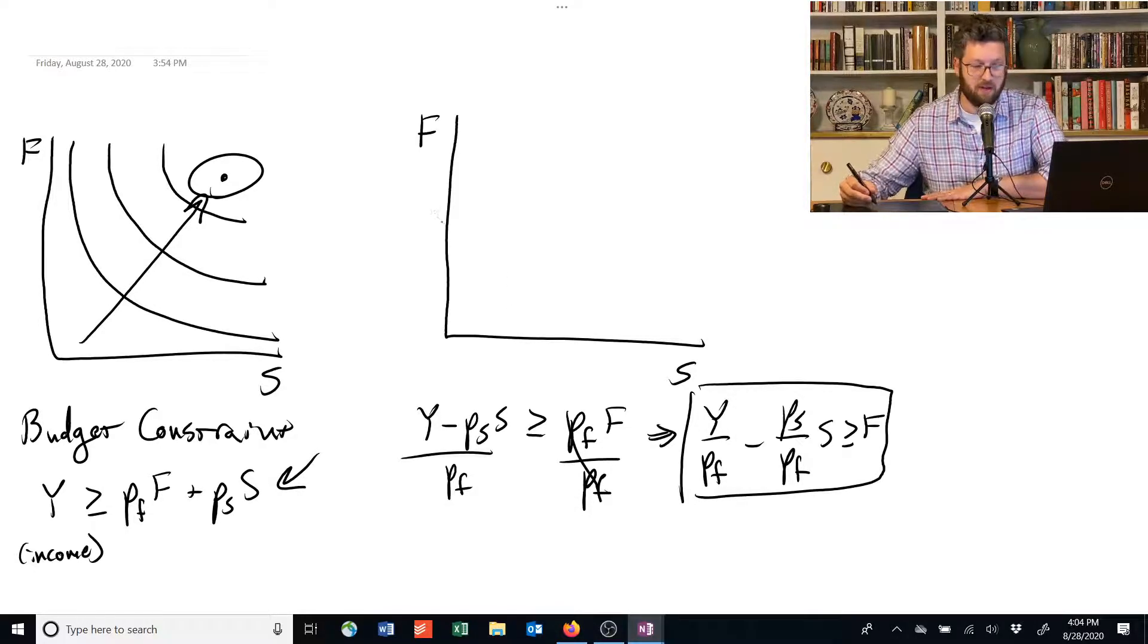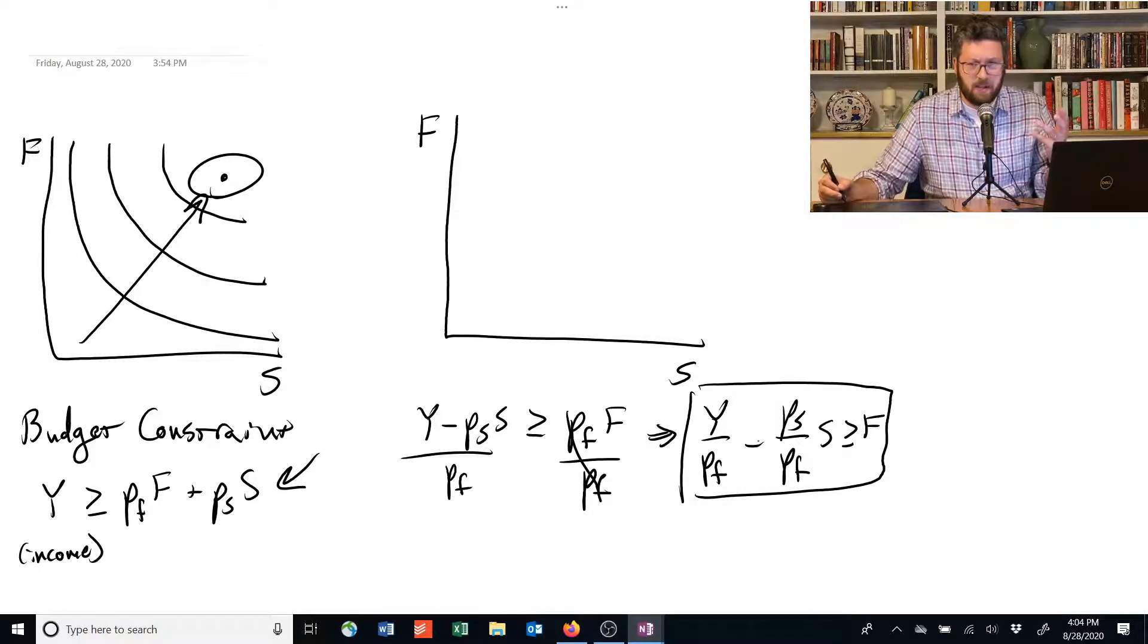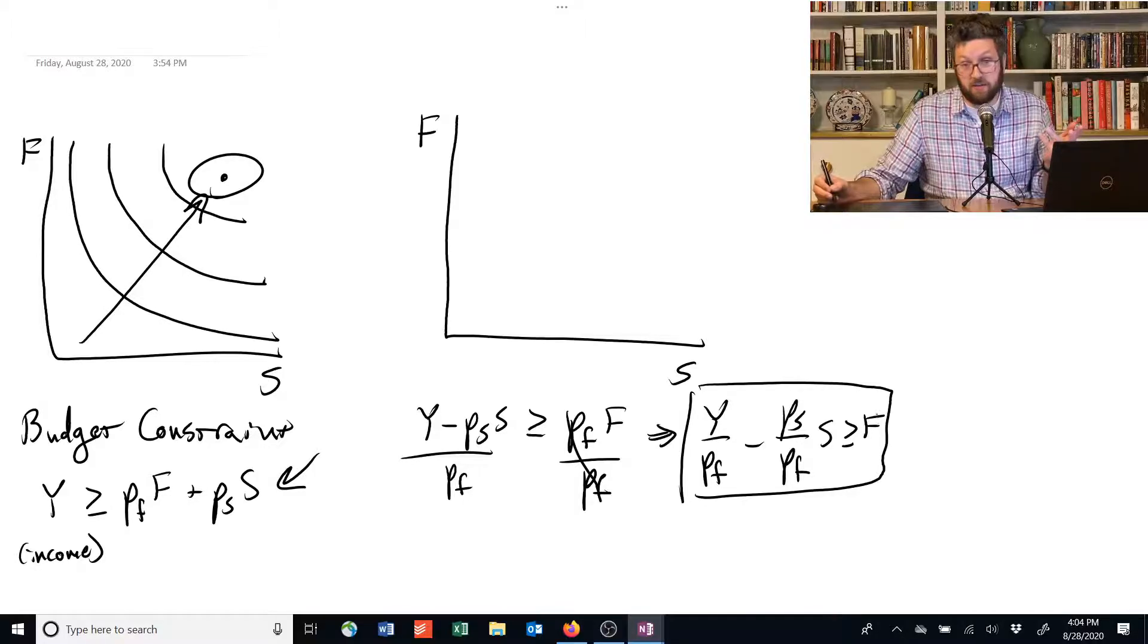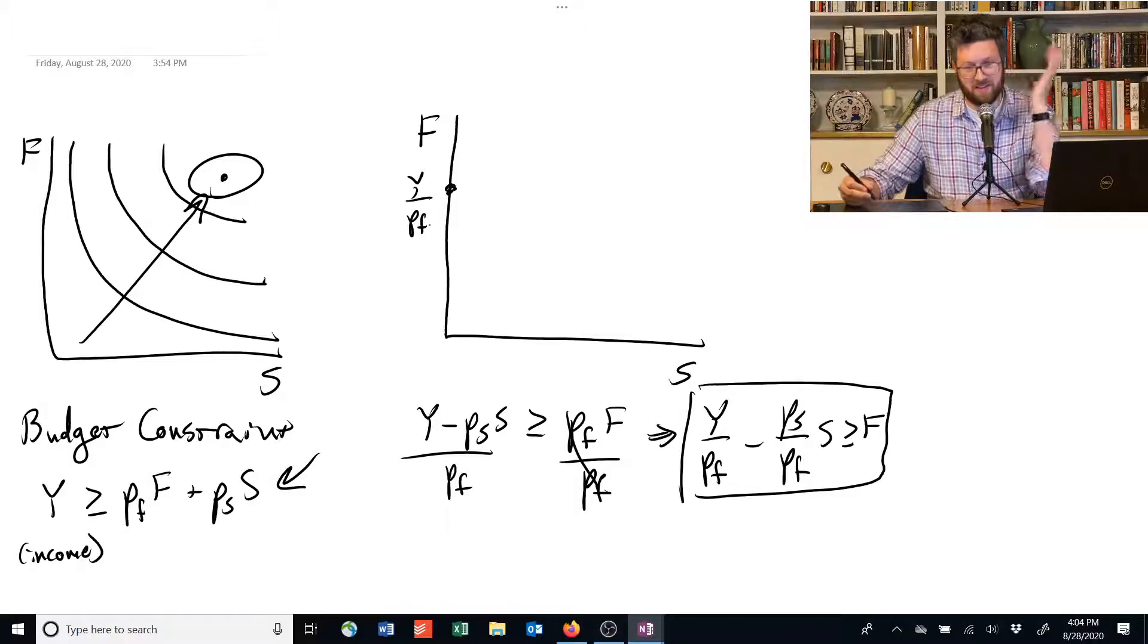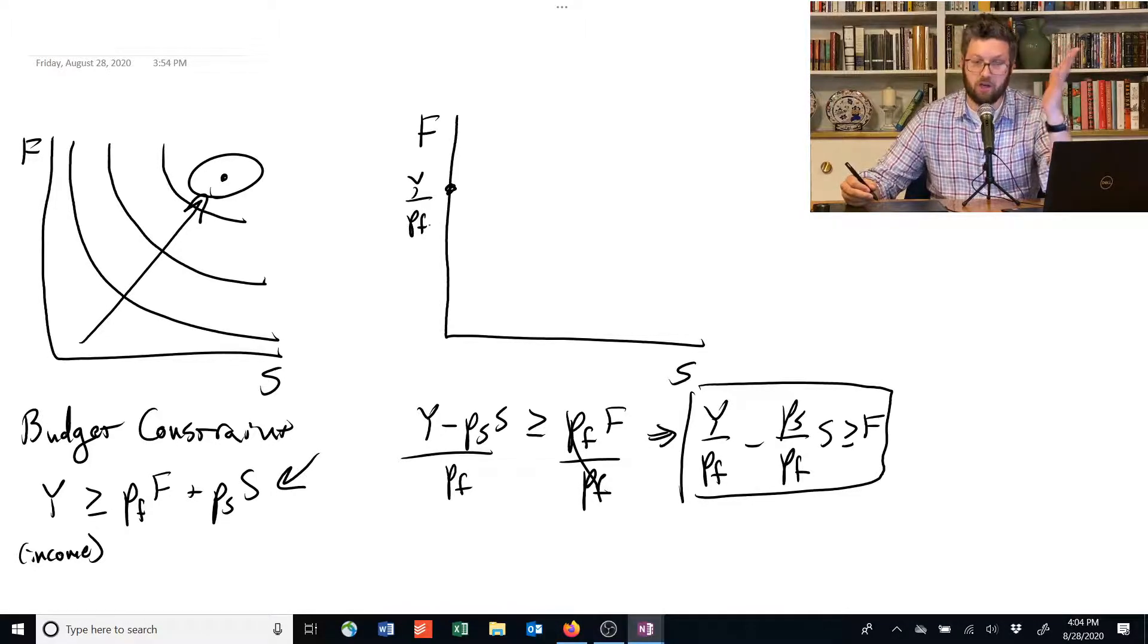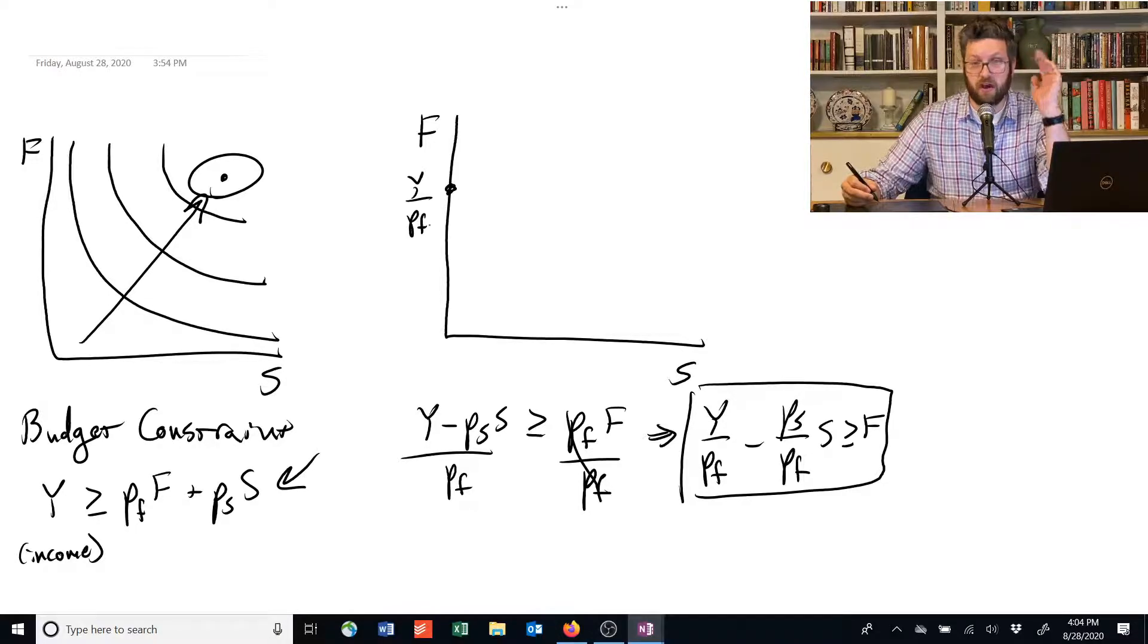So let's graph that. So suppose S is zero, then that means Y over PF is the biggest, is the most food we can possibly get, because food has to be less than whatever's on the left-hand side. So we can say Y divided by PF, and that makes sense. If you take all of your income, Y, and spend it on food, then you divide your income by the price of food. That tells you how much food you can get.